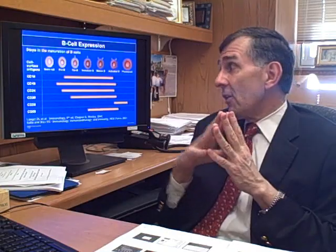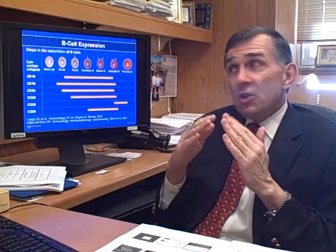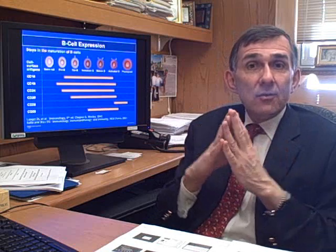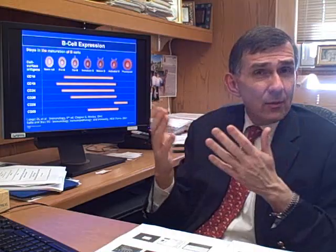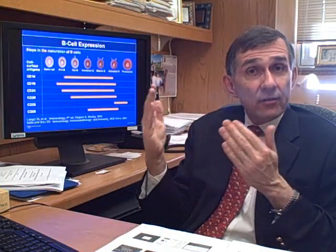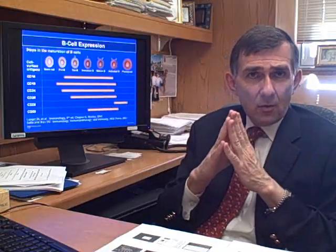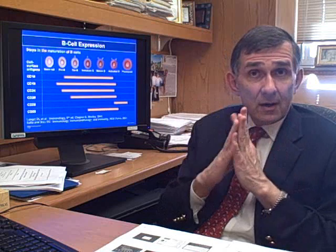The good thing about Rituximab is that because the CD20 molecule is not expressed on stem cells, nor on plasma cells, once you give this to the patient and deplete them of B cells, the stem cells can later reconstitute the entire B cell lineage. In addition, because you don't eliminate the plasma cells — which are involved in sustaining your response from vaccination or acquired immunity — this may explain why this drug has been so well tolerated with a low infection side effect profile, compared to drugs like cyclophosphamide that eliminate all those cells at once and leave patients more prone to infection.